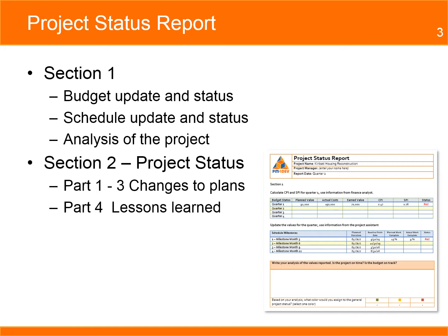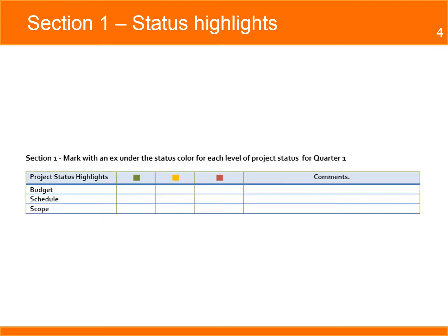The case study is a two-page document that contains four sections. Section 1 presents the current status of the projects on three indicators for scope, schedule, and budget.